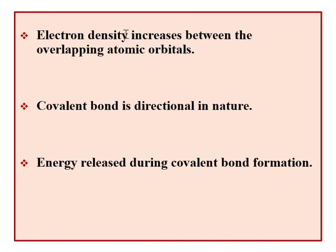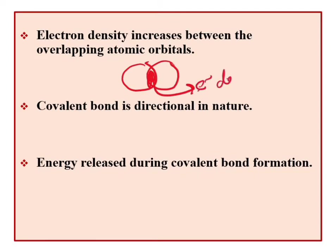The next postulate: electron density increases between the overlapping atomic orbitals. For example, when two orbitals overlap, the electron pair is shared in the region between the two nuclei. The bond becomes stronger as the electron density between the two nuclei increases. This electron density buildup between the nuclei is the basis of covalent bond formation.